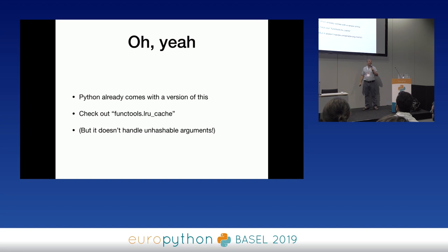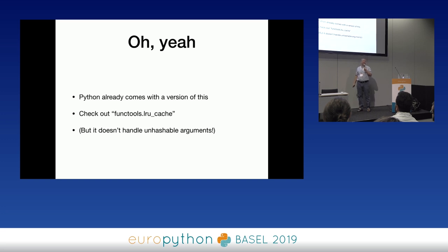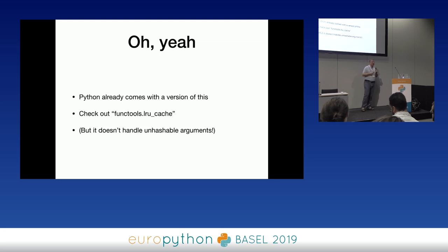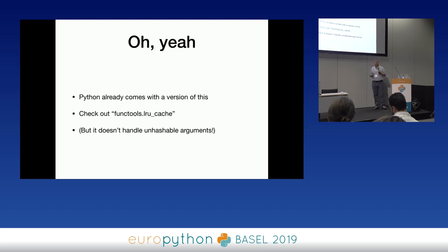Python already comes with a version of this called LRU cache — LRU standing for 'least recently used'. It keeps the most recently used stuff around and is smart enough to get rid of older stuff. But so far as I know, it doesn't handle unhashable arguments and doesn't even look at kwargs.